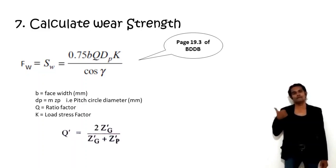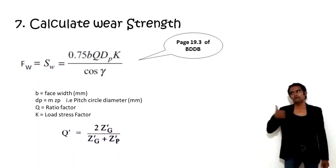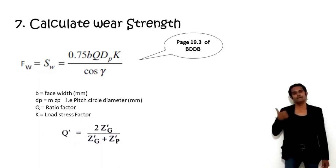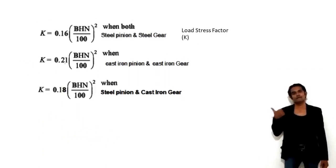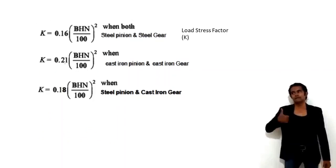Q-dash = 2 × Z-dash-G / (Z-dash-G + Z-dash-P), where Z-dash-G and Z-dash-P are the virtual number of teeth. For the load stress factor K, select the proper value based on material — for example, steel pinion and steel gear: K = 0.16 × (BHN/100)², or select according to material combination.